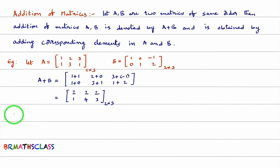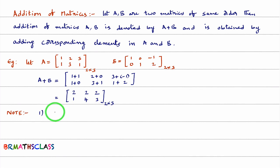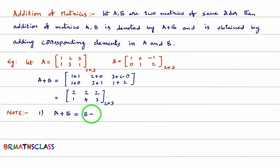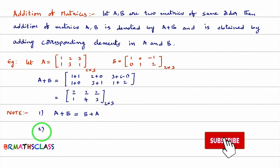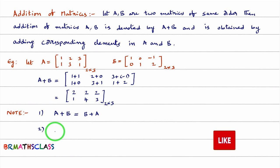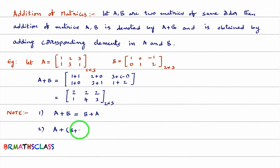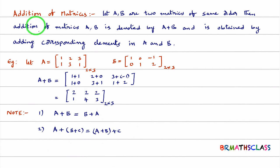Now we will understand a few properties related to addition of matrices. The first property: commutative law holds good in addition of matrices. That means A plus B is the same as B plus A. The second property: with respect to addition, associative law holds good. That is, A plus B plus C equals A plus B plus C.